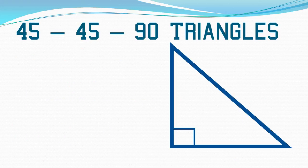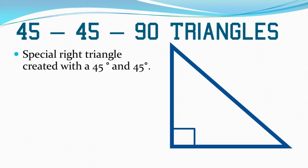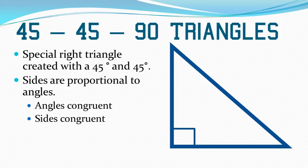Another special type of right triangle is a 45-45-90 triangle. This triangle is also a right isosceles triangle. This is a special right triangle with two 45-degree angles, one 90-degree angle. The sides are proportional to the angles. Since the angles are congruent, automatically the sides are congruent. This makes sense since we've discussed that a 45-45-90 triangle is also a right isosceles. Isosceles triangles have two angles that are congruent and two opposite sides that are also congruent.